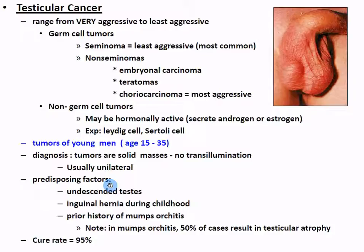Testicular cancers can be very aggressive or not. They primarily happen in the age group of 15 to 35. Germ cell tumors (from stem cells) are called seminomas and are the least aggressive but most common. Testicular cancer is actually one of the highest rate cancers - like skin cancer - but many don't die from it because it's very curable if identified early. Almost all the time it requires removing the testis entirely. The blood-testis barrier that keeps things out also keeps cancer from easily moving into the blood, which is one reason it's often less malignant.